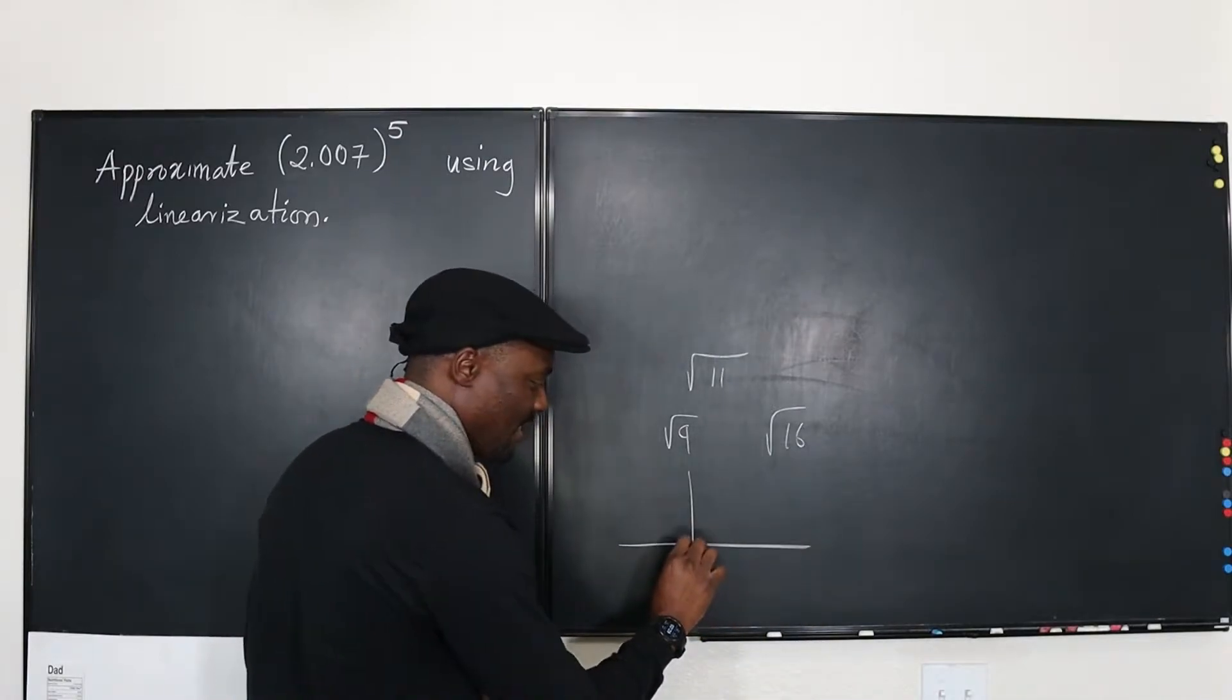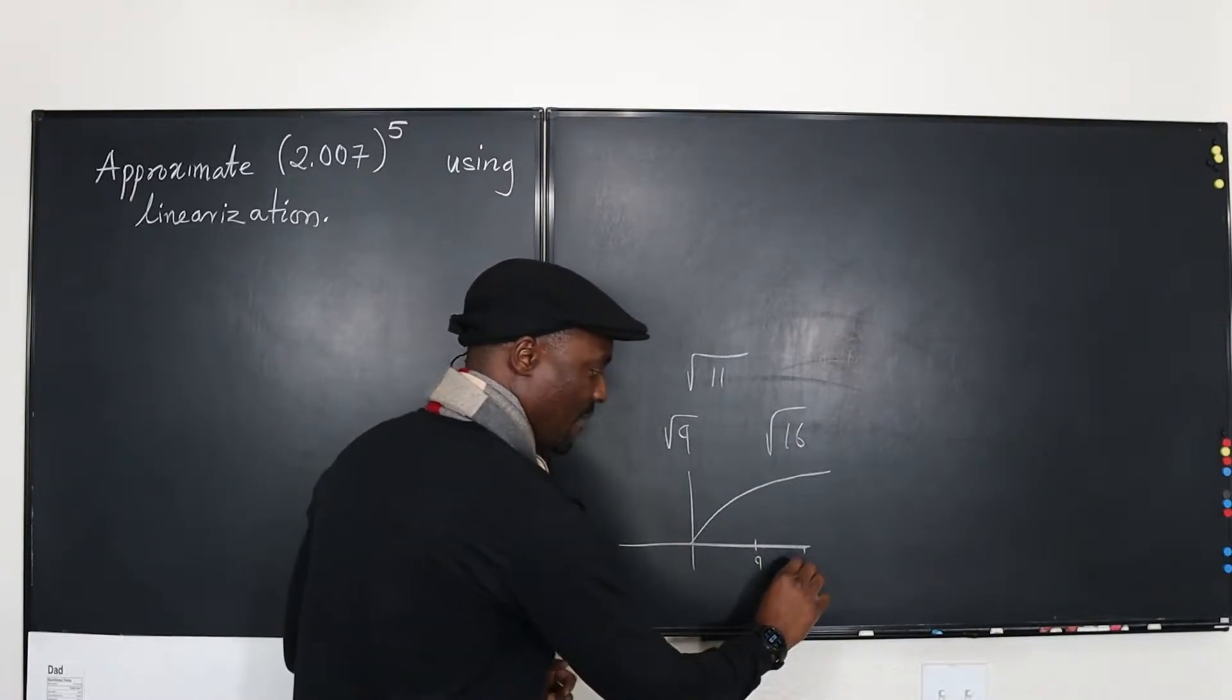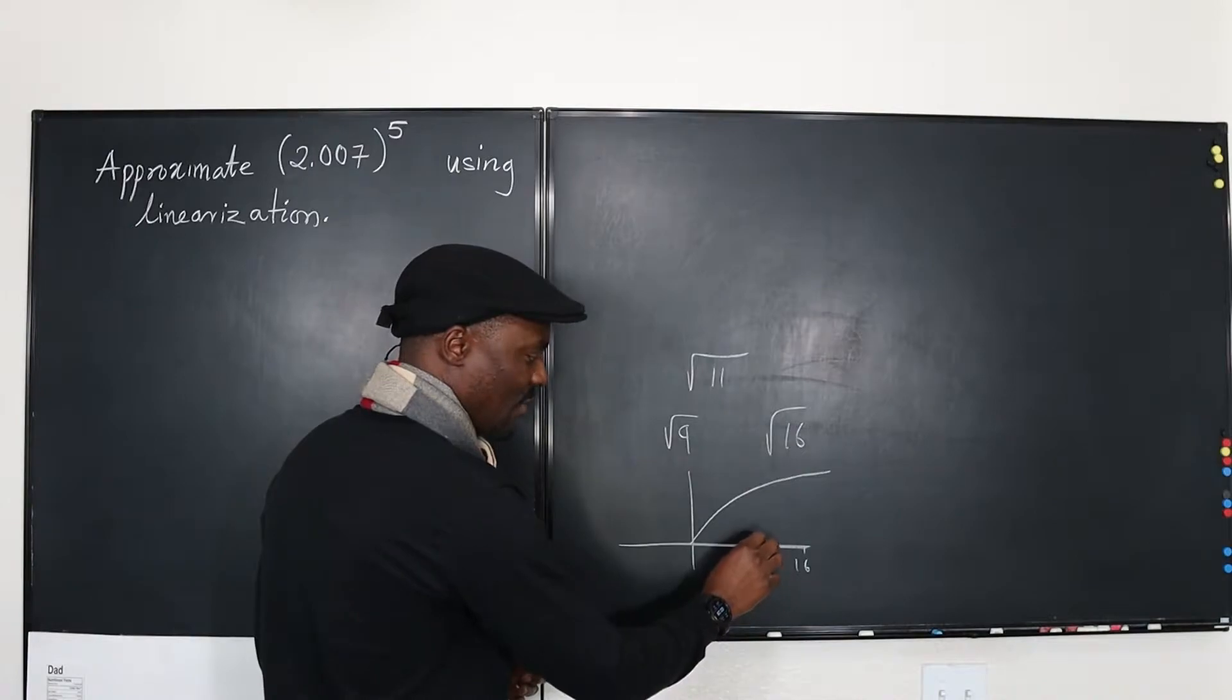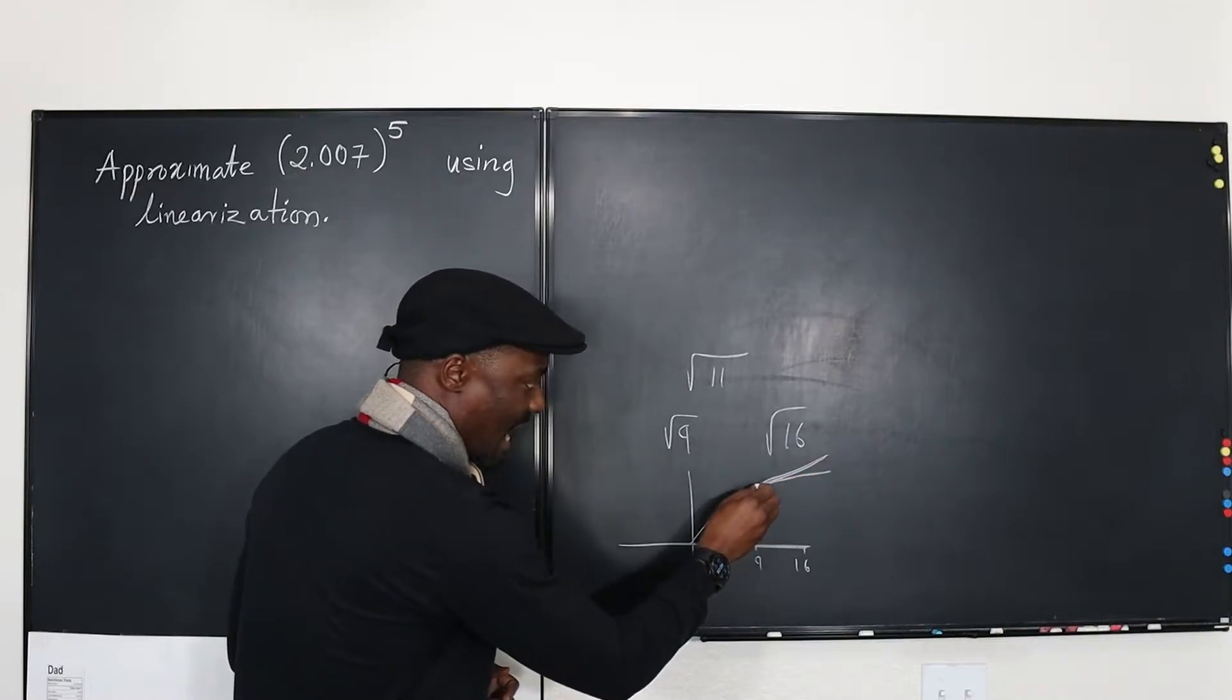But 11 is closer to 9, so you can say, you know what, if I investigate the square root function where x is equal to 9, I know 11 is here, 16 is far away. Why can't I just say, here, instead of me using the curve, I'm going to find a tangent line at this point.